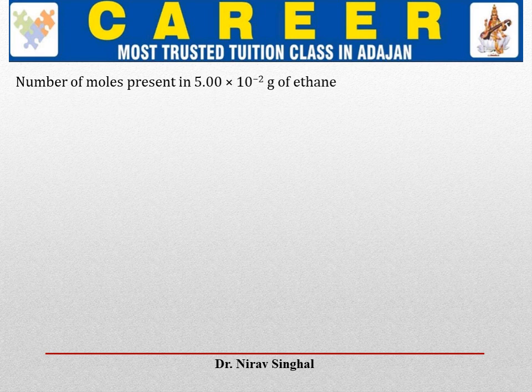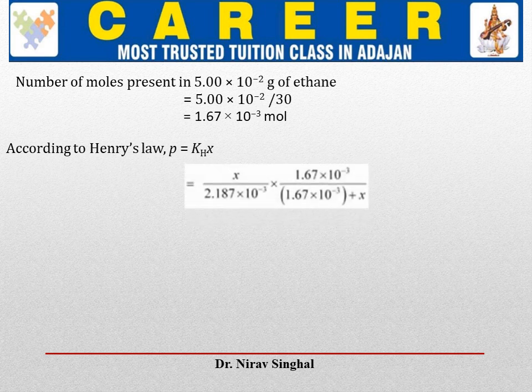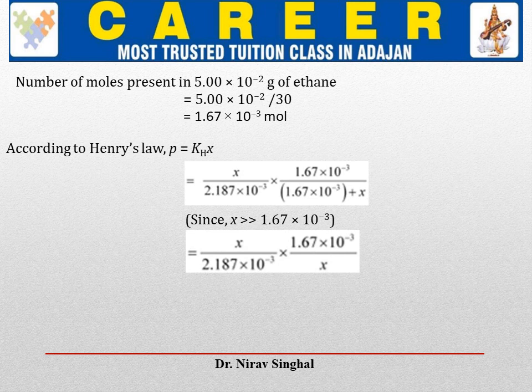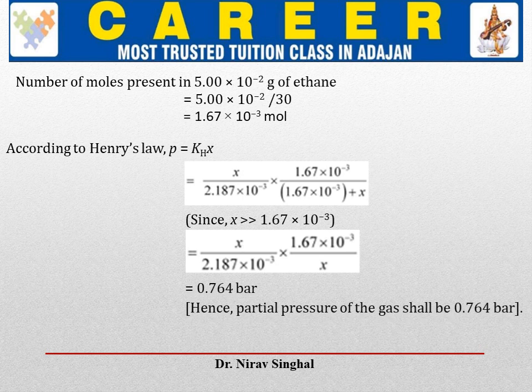Now calculate moles of ethane in 5 × 10⁻² grams: 5 × 10⁻² / 30 = 1.67 × 10⁻³ moles. According to Henry's law, P = KH × X_mole_fraction. Using KH = X / (2.187 × 10⁻³), and new mole fraction ≈ 1.67 × 10⁻³ / X (since X >> 1.67 × 10⁻³). The X values cancel, giving P = (1.67 × 10⁻³) / (2.187 × 10⁻³) = 0.764 bar. So the partial pressure is 0.764 bar.